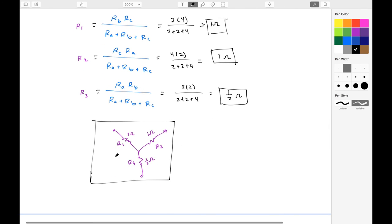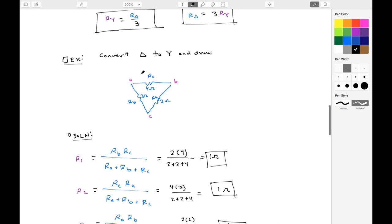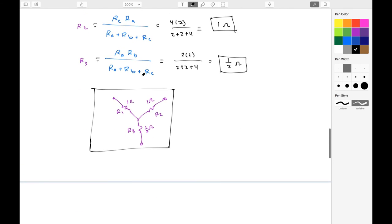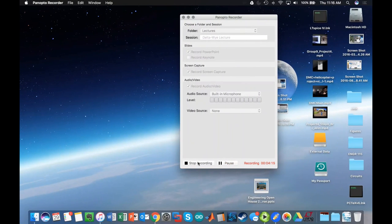And when I redraw it, it's going to look like this. Again, this comes directly from the formulation I had up here where R1, R2, R3 are positioned in this way, corresponding to Ra, Rb, and Rc. And that's really all that you need to know for basic understanding of delta and Y conversions in circuits.